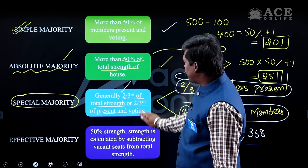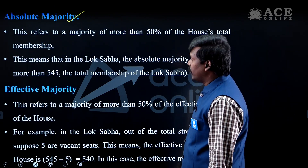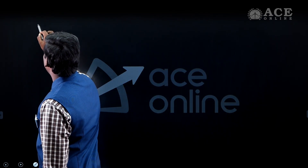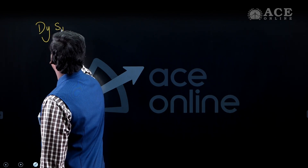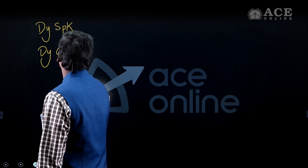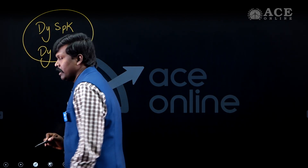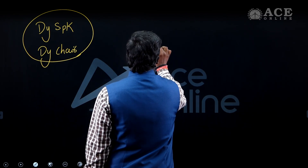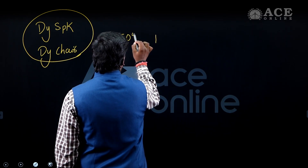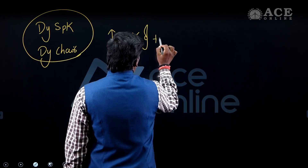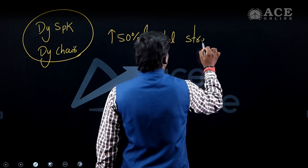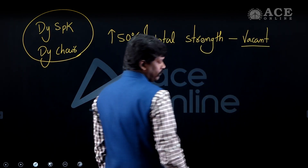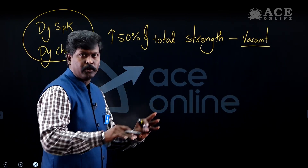Article 368, which deals with constitutional amendments, requires special majority. The last type is Effective Majority. Effective majority is very important. It applies in cases such as removal of the Deputy Speaker, Deputy Chairman, and Speaker.